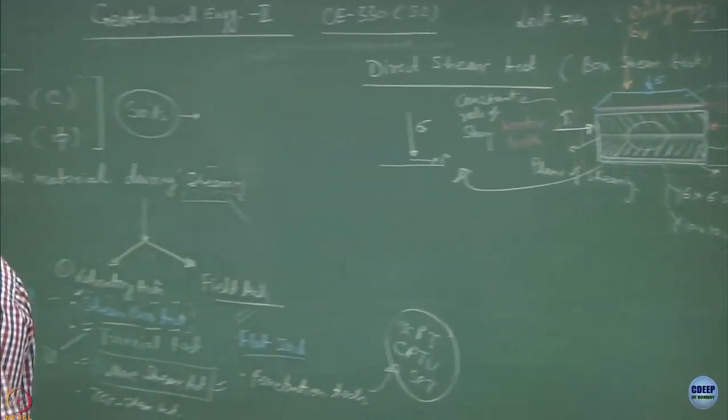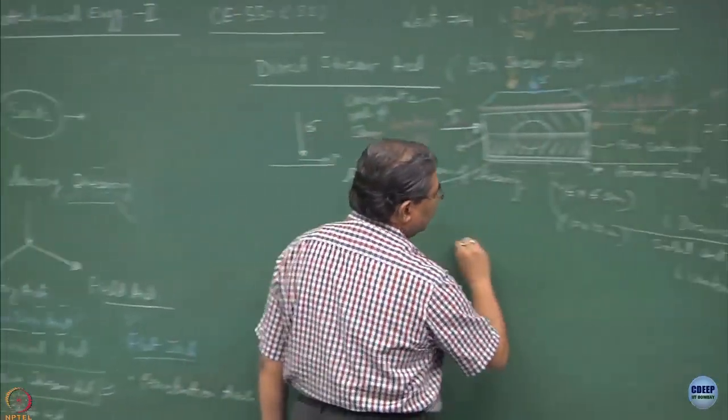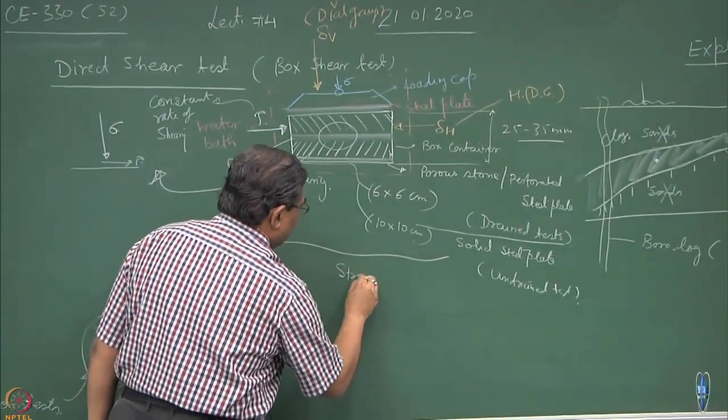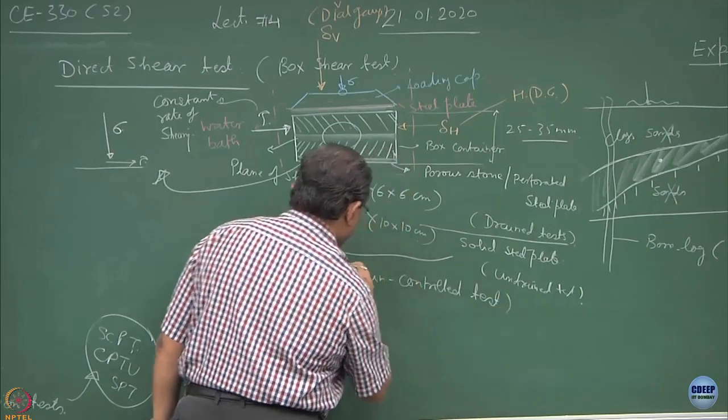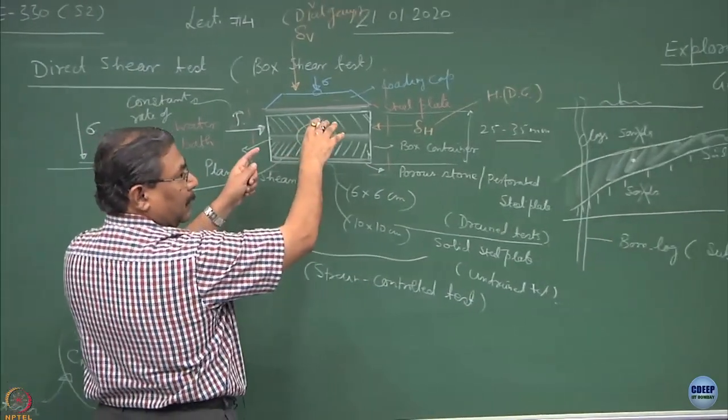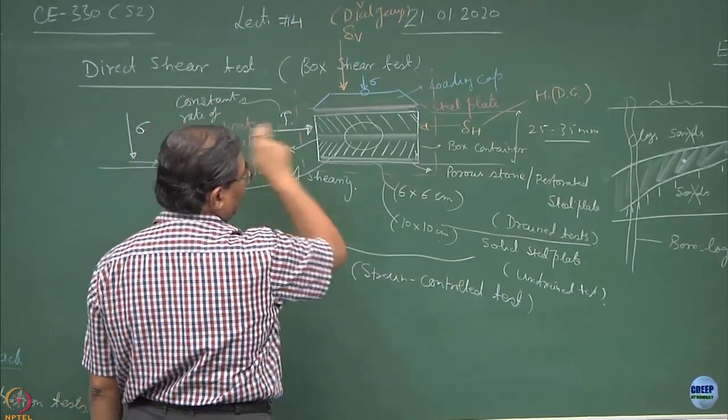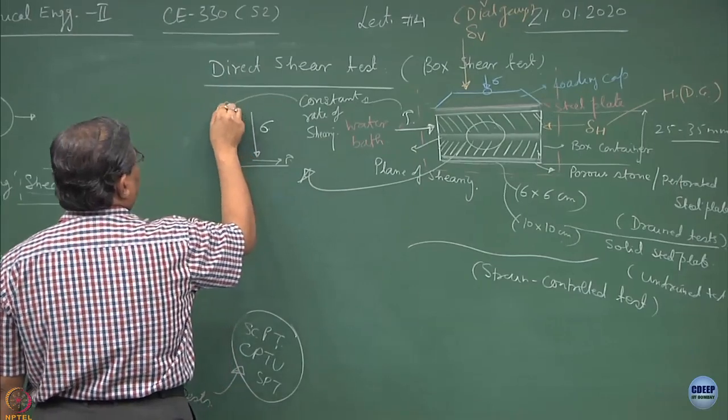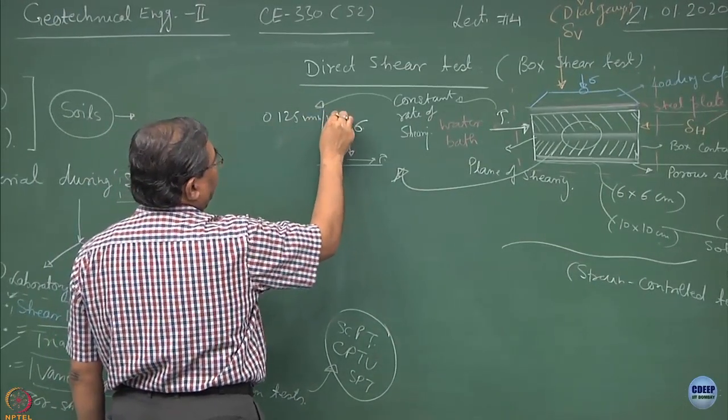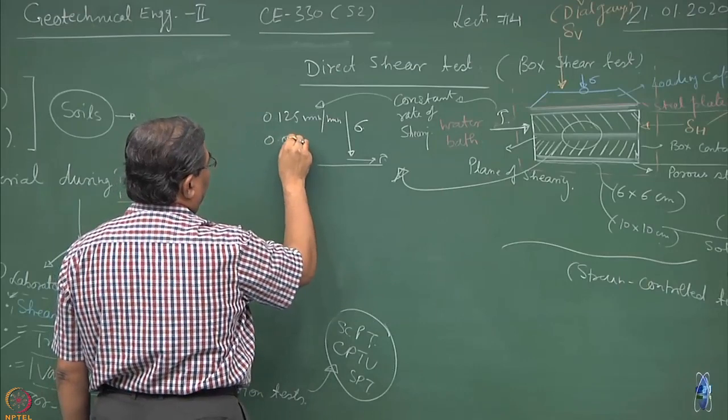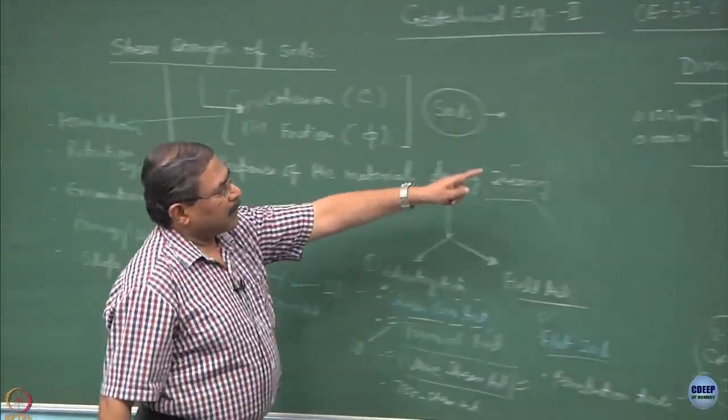And that is why these type of tests are known as strain control tests. This is the whole thing which is as strain control test. Because the way you are straining the sample is in your control. So a known amount of rate of the shearing is given to the sample and normally this is depending upon the gearbox assembly, I can go for 0.125 millimeter per minute or 0.000125 millimeters per minute, it depends upon what is that you are trying to do. So this is going to be a fast test, this is going to be a slow test.